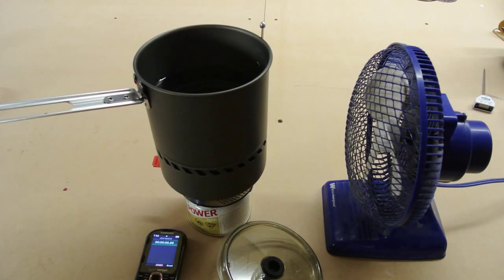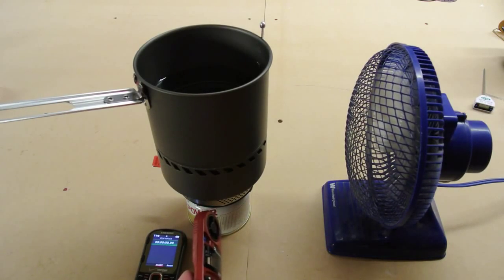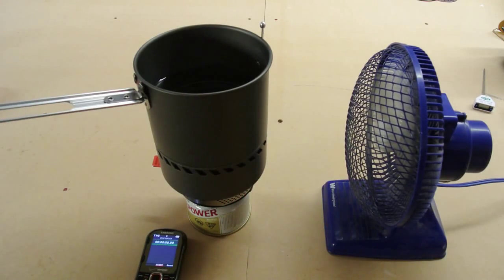And then as far as wind goes, I'm going to kick the fan on here on high, and we should be right around 3.7 miles an hour. And that's what we're getting, 3.6 to 3.7 miles an hour. Fan is in the exact same spot as before. So this should be an apples to apples comparison test as far as wind goes on the stove.